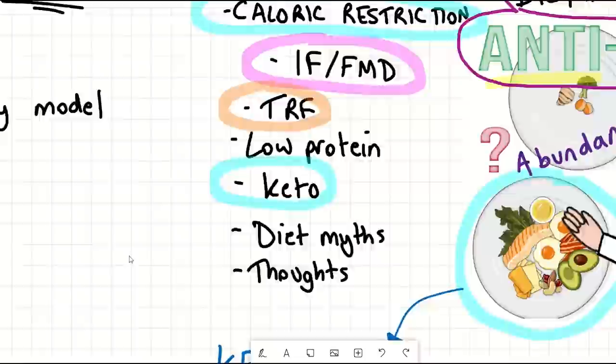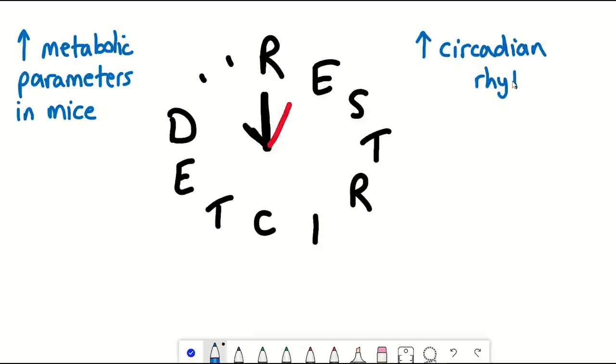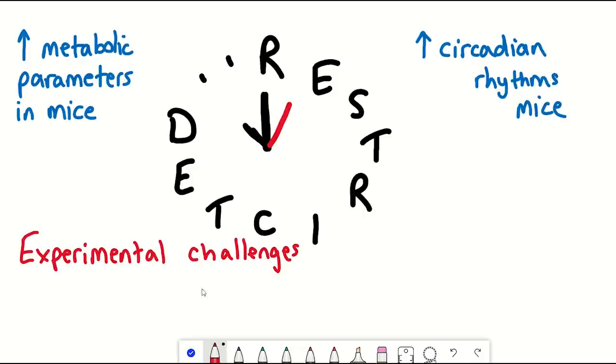And then there is time-restricted feeding, which, as suggested by the name, is when you can eat every day just within a specified time window. Not only has this been shown to improve metabolic parameters in mice, such as glucose and insulin homeostasis, but it also promotes and maintains intrinsic circadian rhythms. One of the challenges, though, with these studies in mice, as with the other intermittent strategies, is ensuring that the mice eat equivalent amounts of food to the control mice, and in the case of time-restricted feeding, that they don't eat all the food at once, but throughout the time window.